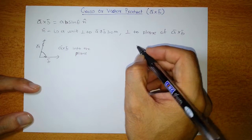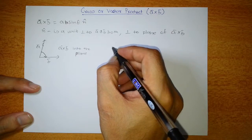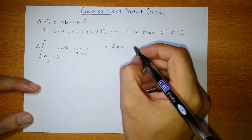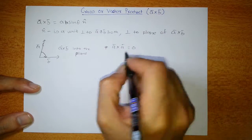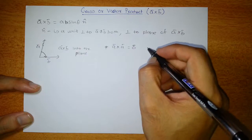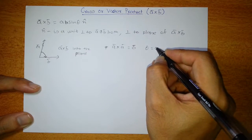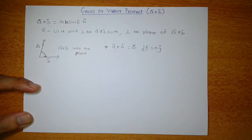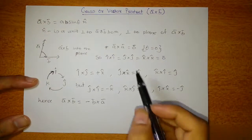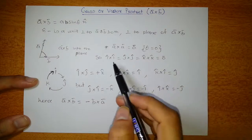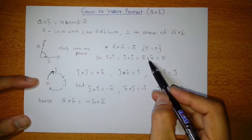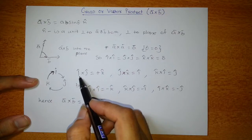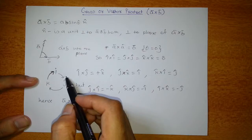Now, a few important things about cross product. A cross A will be zero, or the null vector, because θ will be 0 between vector A and itself, and sin 0 is 0. Since A cross A is zero, we can say i cross i, j cross j, and k cross k will also all be zero.